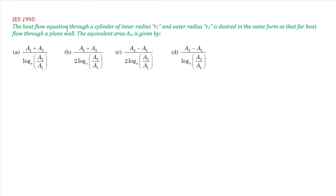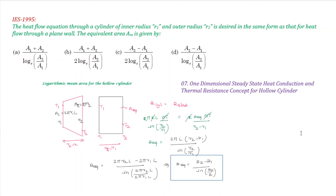The next question is IS-1995: when the heat flow equation through a cylinder is expressed using the same form as a plane wall, what is the equivalent mean area for the hollow cylinder? The answer uses the log mean area concept: A_mean = (A2 - A1) / ln(A2/A1). Answer D is the correct answer.